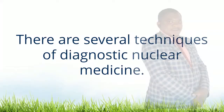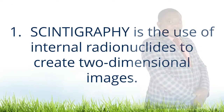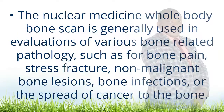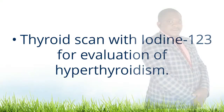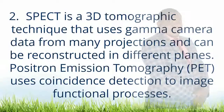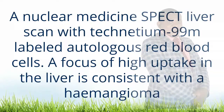There are several techniques of diagnostic nuclear medicine. 1. Scintigraphy is the use of internal radionuclides to create two-dimensional images. The nuclear medicine whole-body bone scan is generally used in evaluations of various bone-related pathology such as bone pain, stress fracture, non-malignant bone lesions, bone infections, or the spread of cancer to bone. Thyroid scan with iodine-123 is used for evaluation of hyperthyroidism. 2. SPECT is a 3D tomographic technique that uses gamma camera data from many projections and can be reconstructed in different planes. Positron emission tomography uses coincidence detection to image functional processes. A nuclear medicine SPECT liver scan with technetium-99m labeled autologous red blood cells — a focus of high uptake in the liver is consistent with a hemangioma.